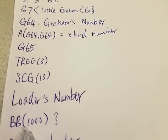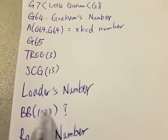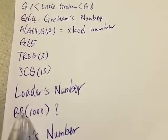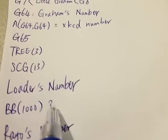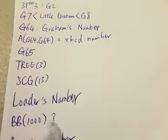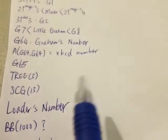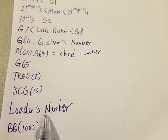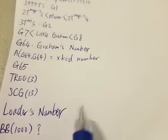Then we have BB, which stands for the Busy Beaver function. We don't know how big N has to be to make BB(N) bigger than Loader's number, but we know N most likely doesn't have to be very big — probably smaller than 1000. The Busy Beaver function is one of the most famous uncomputable functions, which grows faster than any computable function. Therefore, eventually, whatever N we put in, it will grow faster than anything below it — because even Loader's number is a computable function.